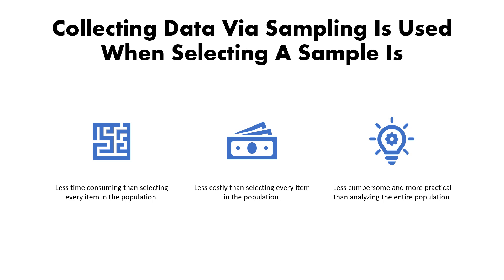Collecting data via sampling is used when selecting a sample. We need to understand three things: why are we selecting a sample? We select a sample because it is less time-consuming, less costly, and less cumbersome and more practical than analyzing the entire population.